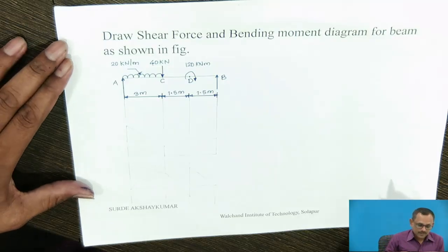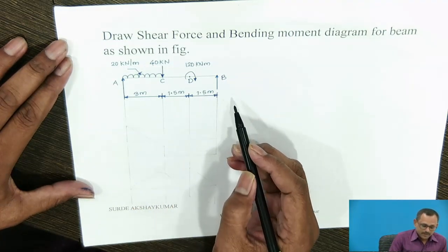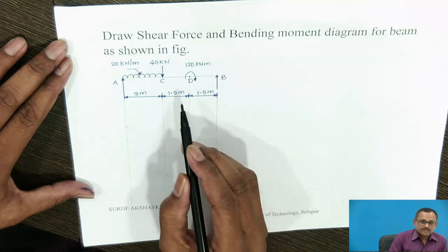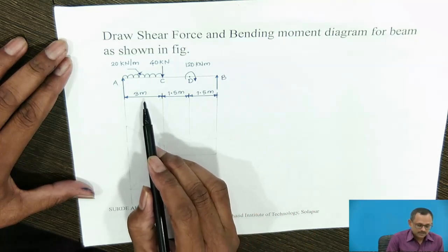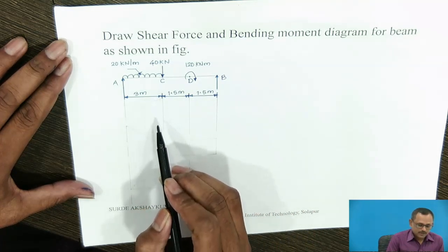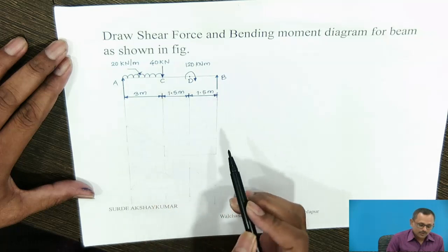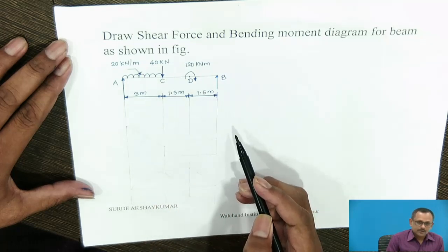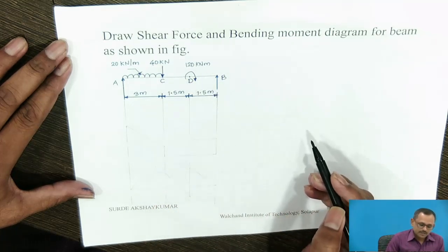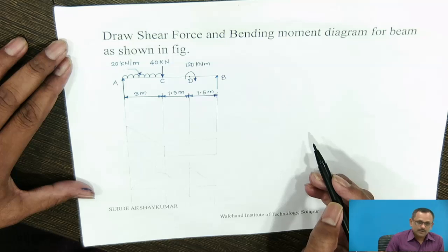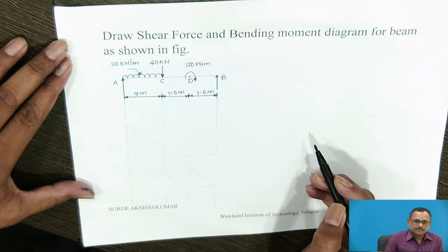A simply supported beam AB carries a UDL of 20 kN/m over a span of 3 m, along with a point load of 40 kN. At point D, there is a couple of 120 kN·m. Calculate the Shear Force and Bending Moment Diagram.